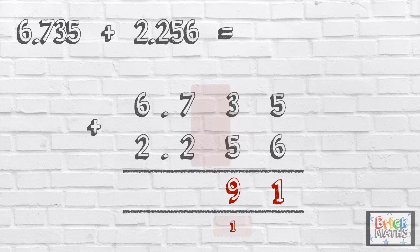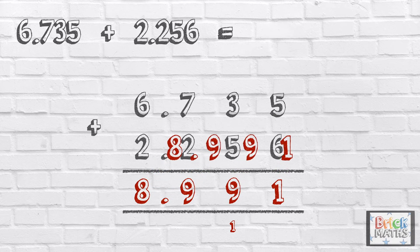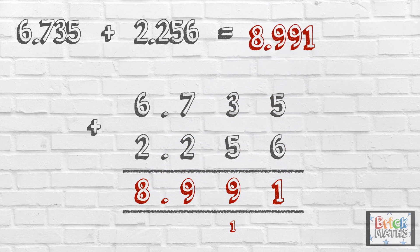Now we add the tenths: seven add two, which is nine. Then six add two, which is eight. Make sure you put the decimal point in the correct place. So the answer is eight point nine nine one.